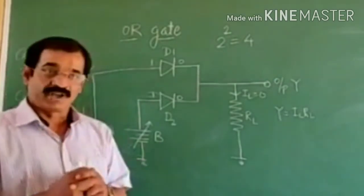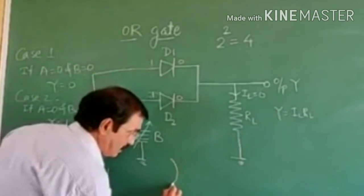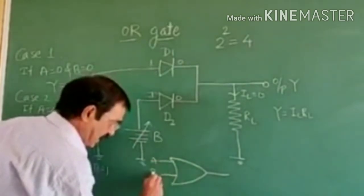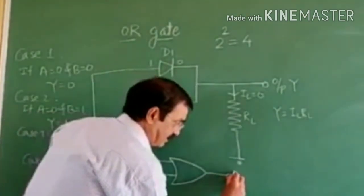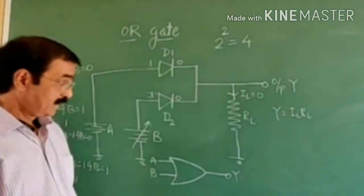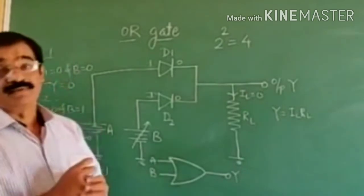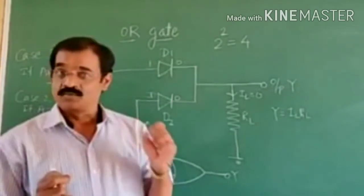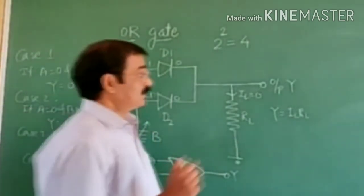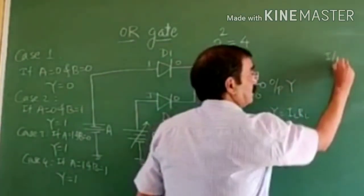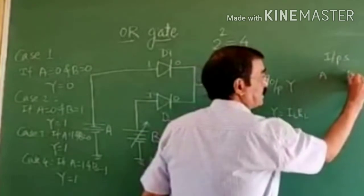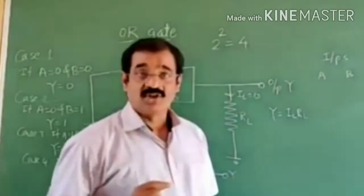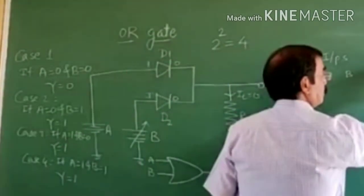Friends, the logic symbol of the OR gate is like this — draw the figure with inputs A and B on the left-hand side and output Y on the right-hand side. Now, truth table: the table which summarizes all the input and output conditions is called as a truth table. In the truth table there are two inputs A and B and output Y. The Boolean equation of the OR gate is Y is equal to A plus B.